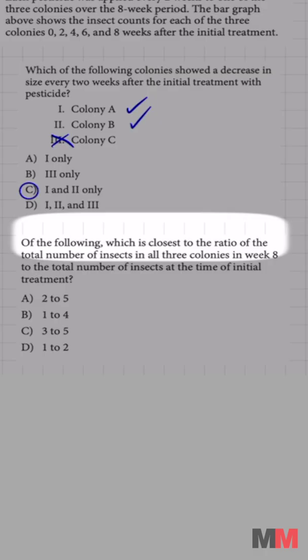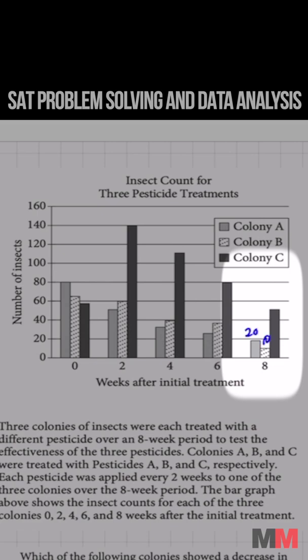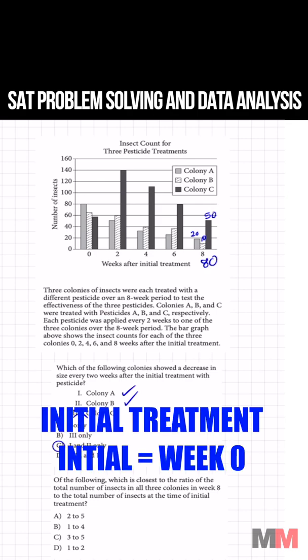The last question is asking for the ratio of the total number of insects in all three colonies. So you're going to add up all three colonies in week eight. That's about 20, 10, and this one's in between, so that's 50. Total of 80 compared to the initial treatment.